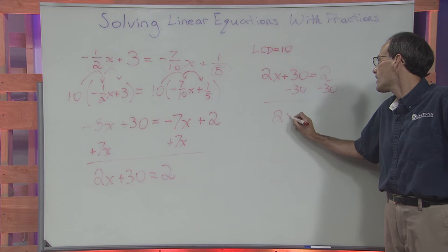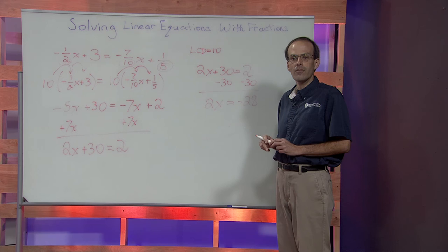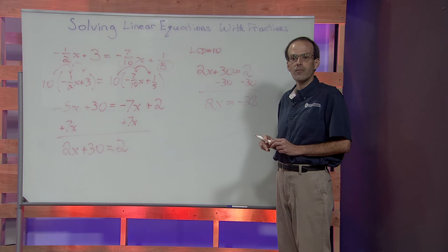And again, simplify. Two subtract thirty is negative twenty-eight. Once the variables have been moved to the left-hand side and the constants have been moved to the right-hand side, we'll conclude the problem by dividing by the coefficient of the variable, which in this case is two, yielding our solution that x is equal to negative fourteen.